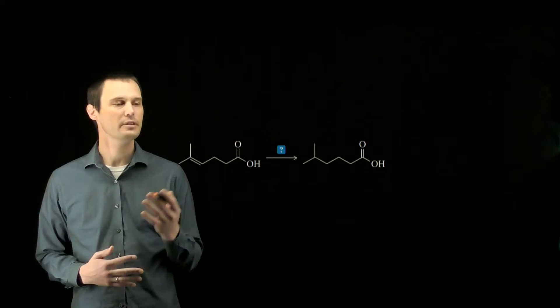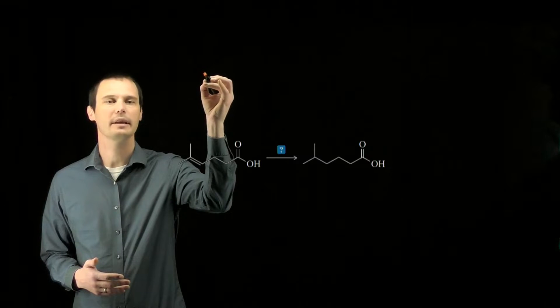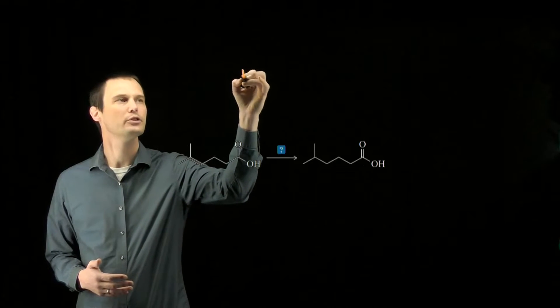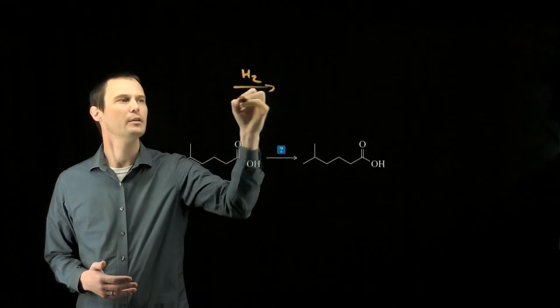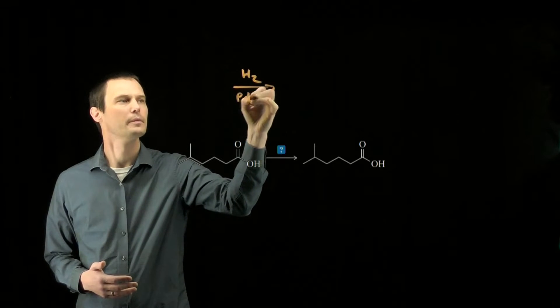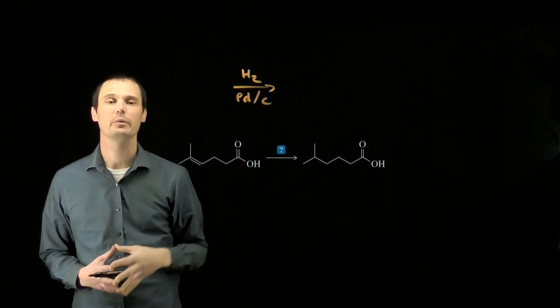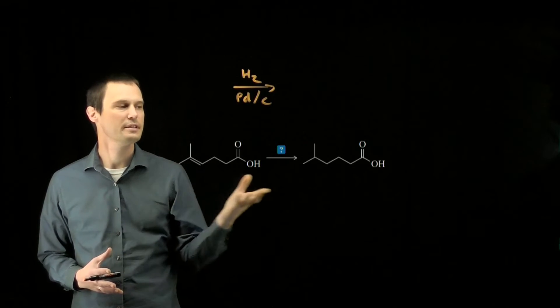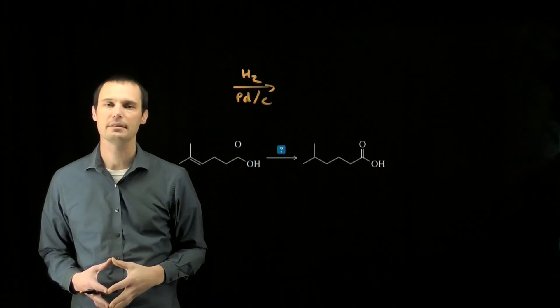The reduction conditions that reduce an alkene but not a carboxylic acid would be hydrogen gas and palladium on carbon. These are the reduction conditions we would need to reduce this alkene to the alkane, but not the carboxylic acid.